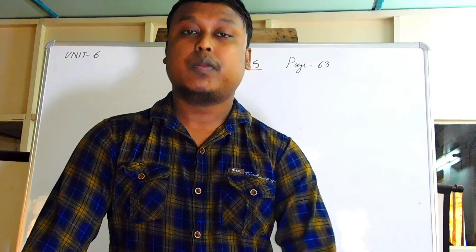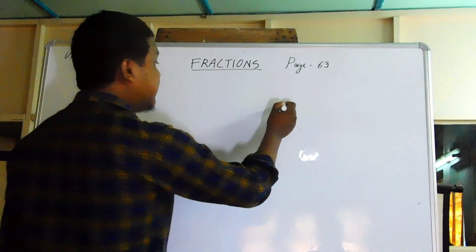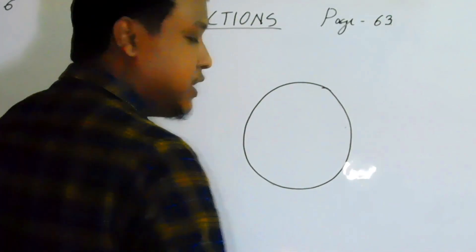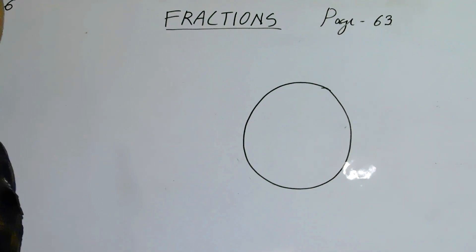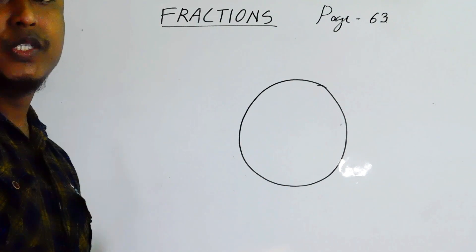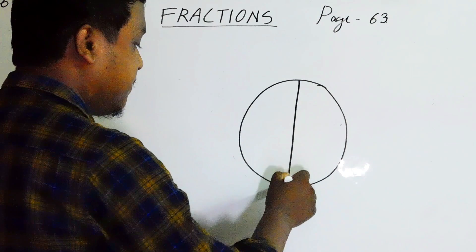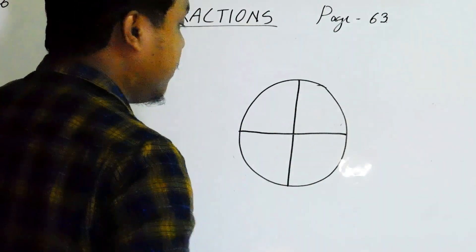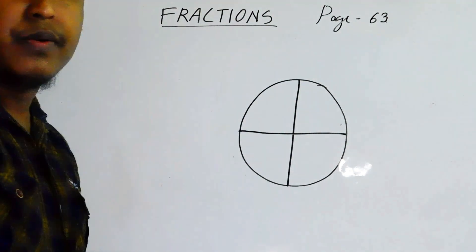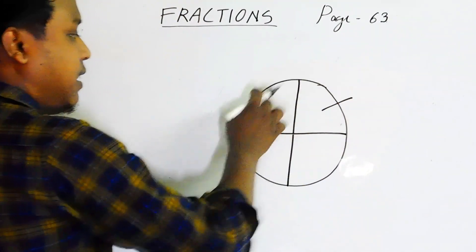Consider that a father bought a piece of cake for the children in the family. There are four children in the family, and the father wants the cake to be divided among the children. So this cake is divided into four equal parts, and each part will be sufficient for one child.